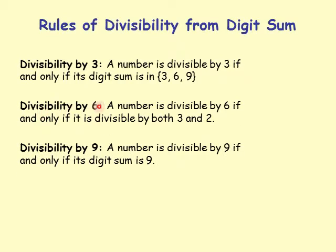Divisibility by 6: a number is divisible by 6 if and only if it is divisible by both 3 and 2 — meaning its digit sum must be in {3, 6, 9} and it must also be an even number.